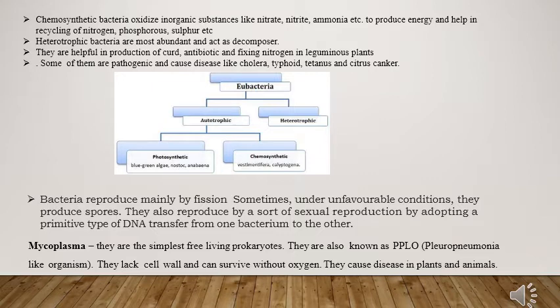Some of these bacteria are pathogenic, meaning disease-causing bacteria. Diseases caused by these bacteria include cholera, typhoid, tetanus, and citrus canker. Citrus canker is a plant disease.